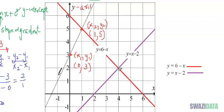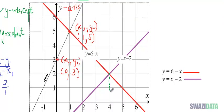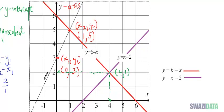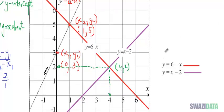To solve these simultaneous equations graphically, we find where the two lines intersect. Looking at the graph, the intersection point is at (4, 2). Therefore, the solution is x equals 4 and y equals 2.